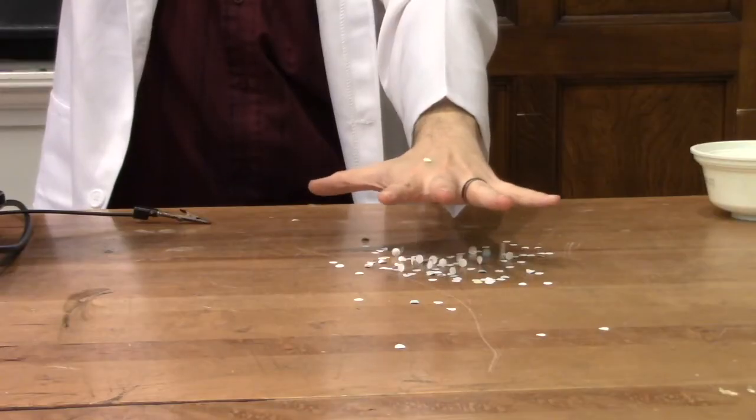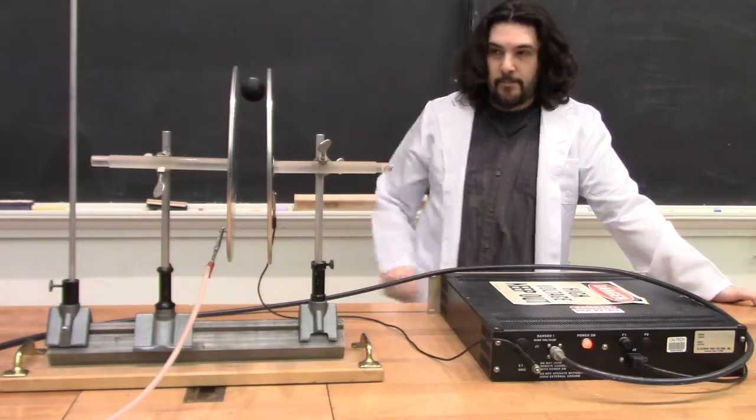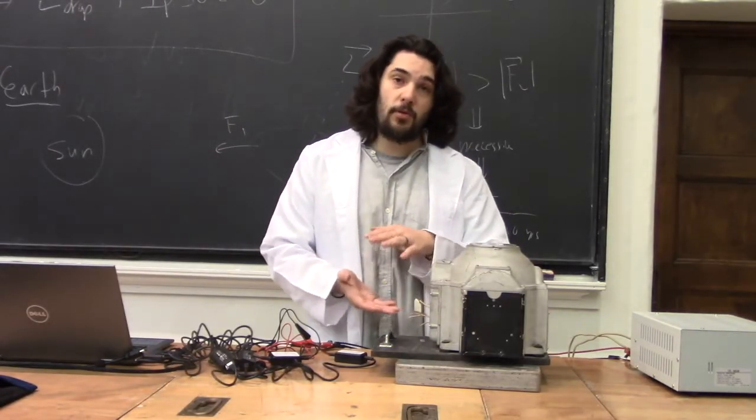If you put a gyroscope inside the aircraft you can use it to determine your orientation to the ground.